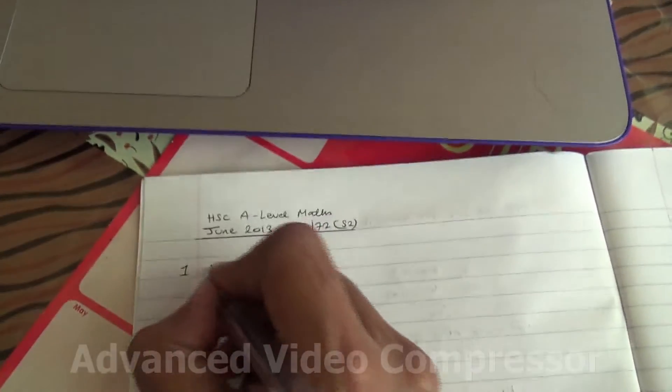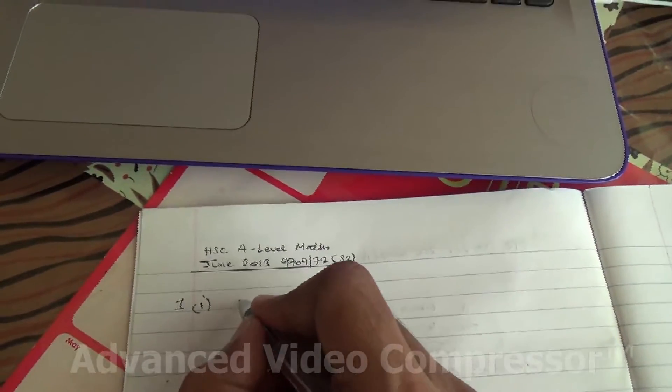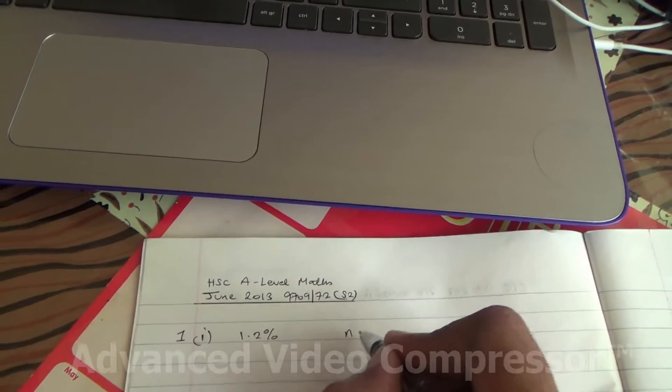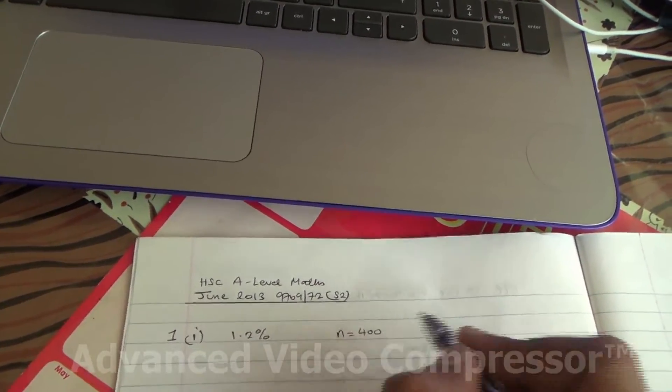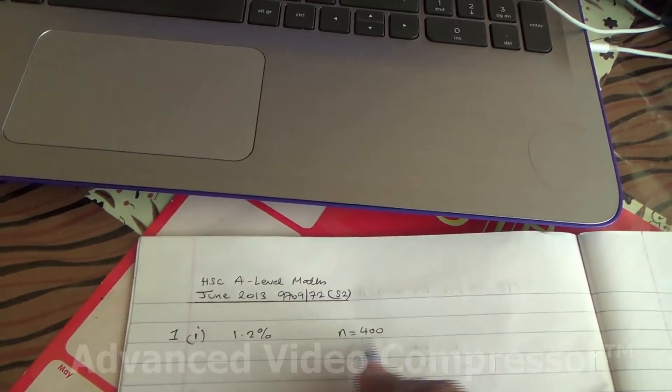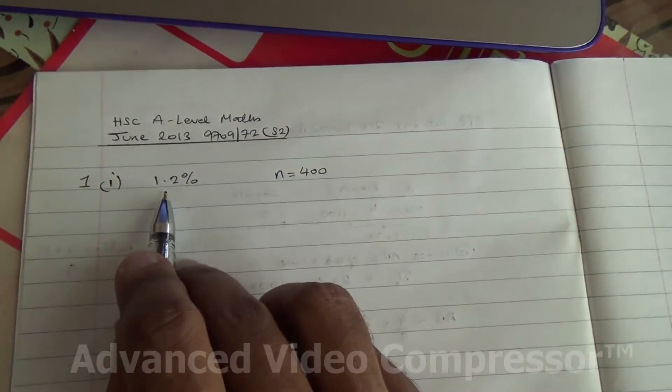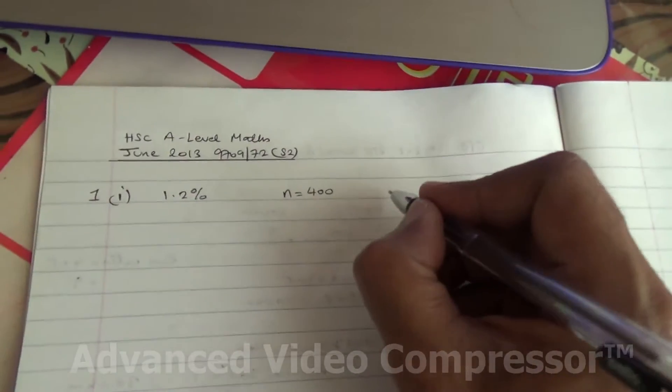So for the first part, we got 1.2% of rod is known to be bent, and the sample contains 400 rods. So this is the number of trials here, number of rods. It looks like a binomial distribution to me.